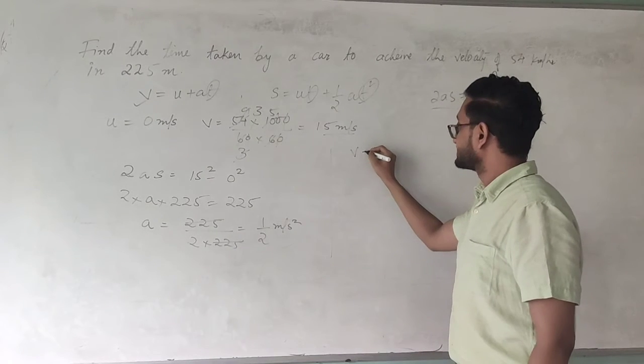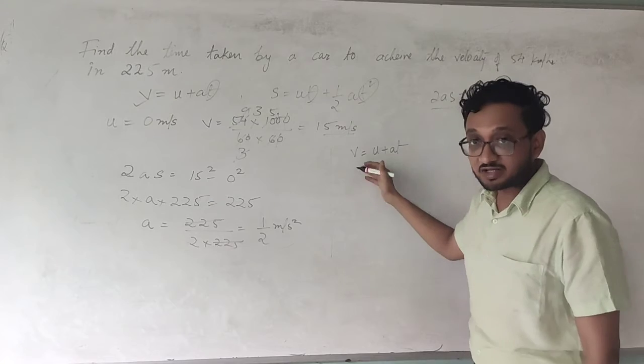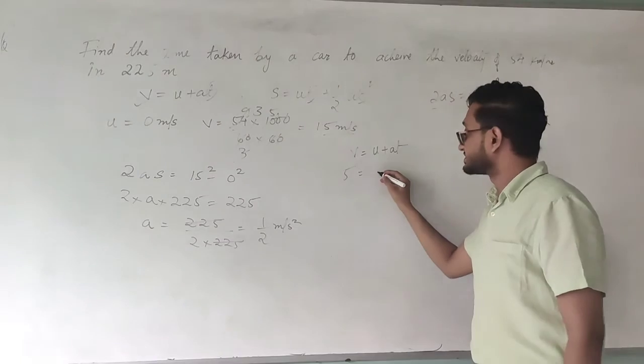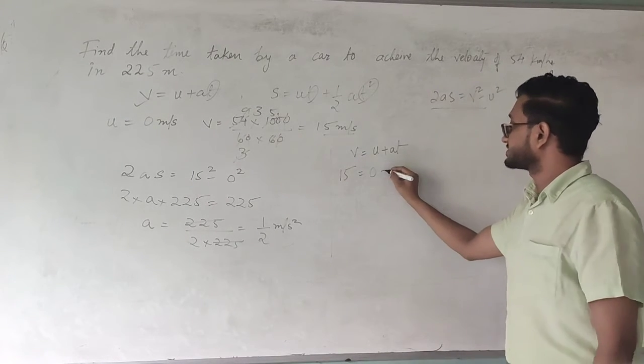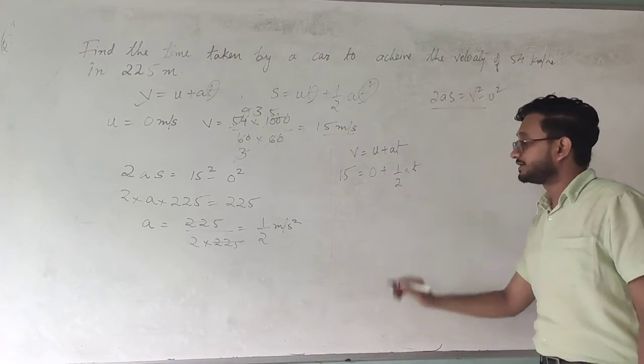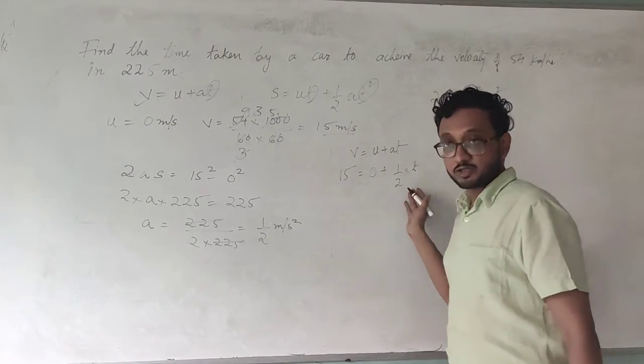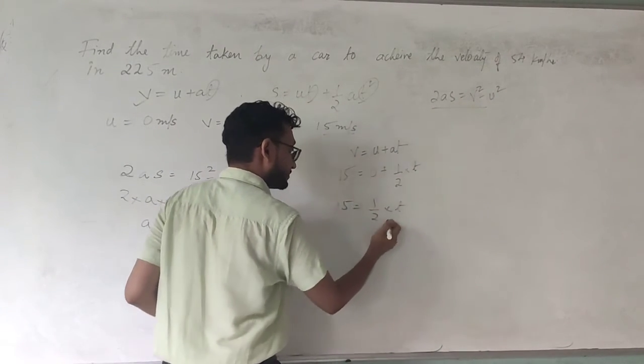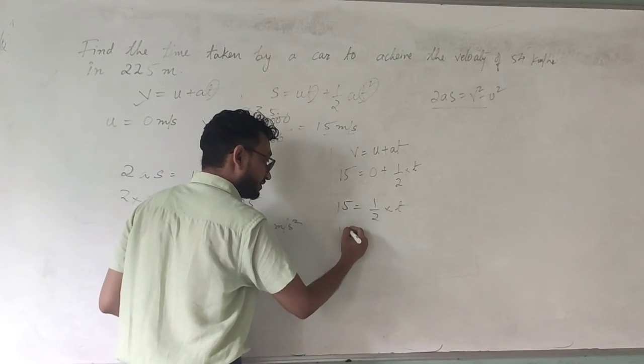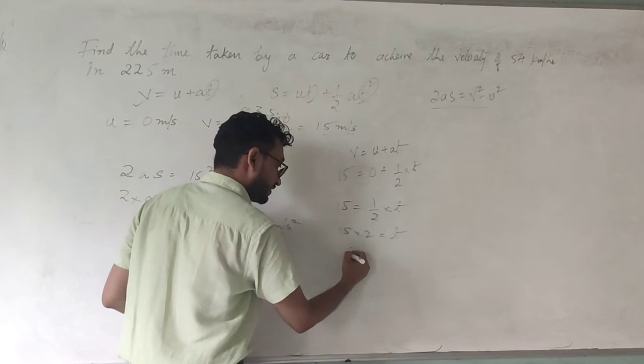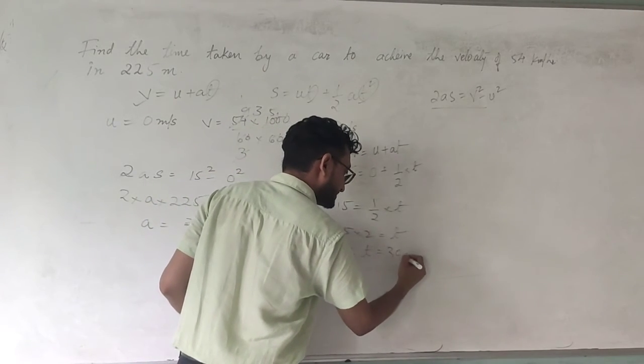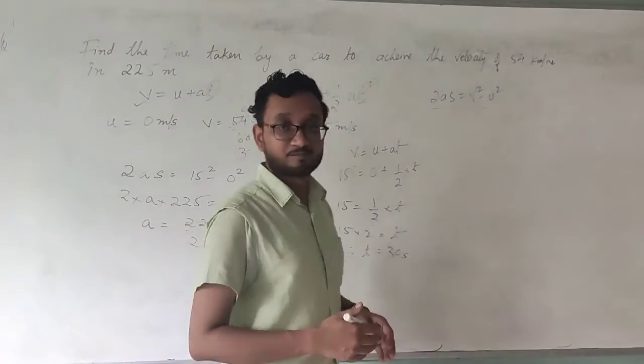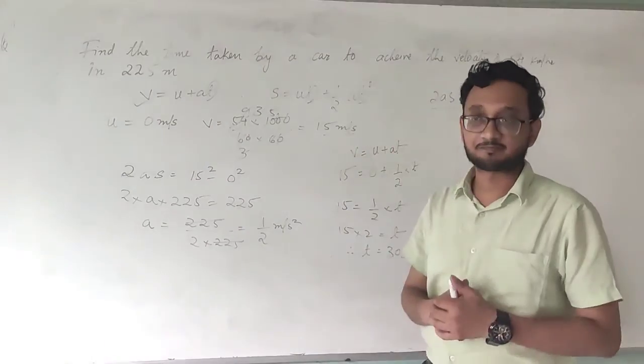Now you can substitute these values in the first equation of motion, that is v is equal to u plus at. Final velocity is 15, initial velocity is 0, acceleration is 1 by 2, and time you need to find. So you have 15 is equal to 1 by 2 into t. Cross multiplication: 15 into 2 becomes t, therefore t is equal to 30 seconds. This is how you are supposed to apply these equations.